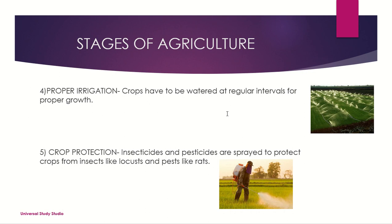Number four: proper irrigation. Crops have to be watered at regular intervals for proper growth. You can see here what is meant by irrigation — these are basically sprinklers irrigating all the fields.